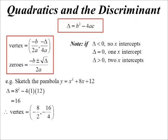So the vertex now, I can just go, okay, minus b on 2a, minus the discriminant on 4a. And so there's our vertex, minus 4, minus 4.